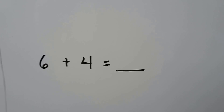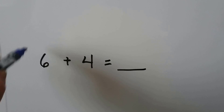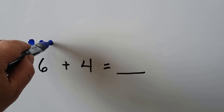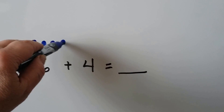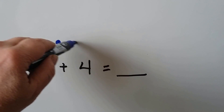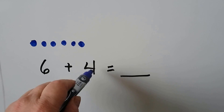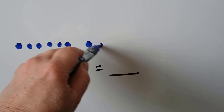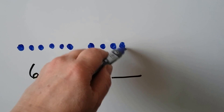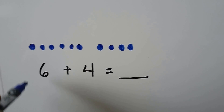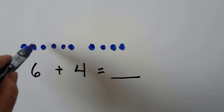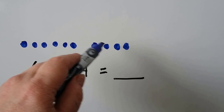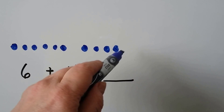Six plus four. We can use dots. Six dots plus four more dots: one, two, three, four, five, six, seven, eight, nine, ten.